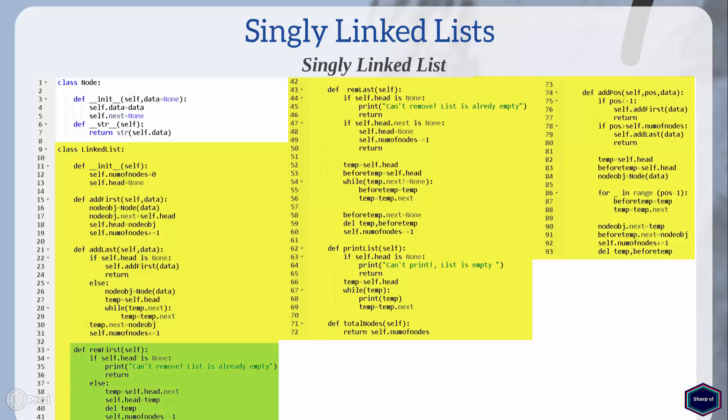The remove_first method removes the first node from the list. If the list is not empty, I copy the address of the second node in the list, then I remove the head and set the head to the address which I copied before. Then I decrease the number of nodes attribute by one.